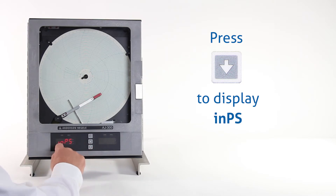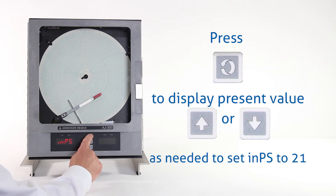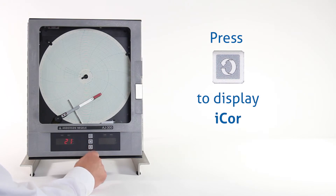Now we're at the input select. When we see input select, we're going to press the scroll key. This value needs to be set to 21 for RTD input, so we press the up arrow key several times to get that to 21. Once we have 21 on the display, we press the scroll key.